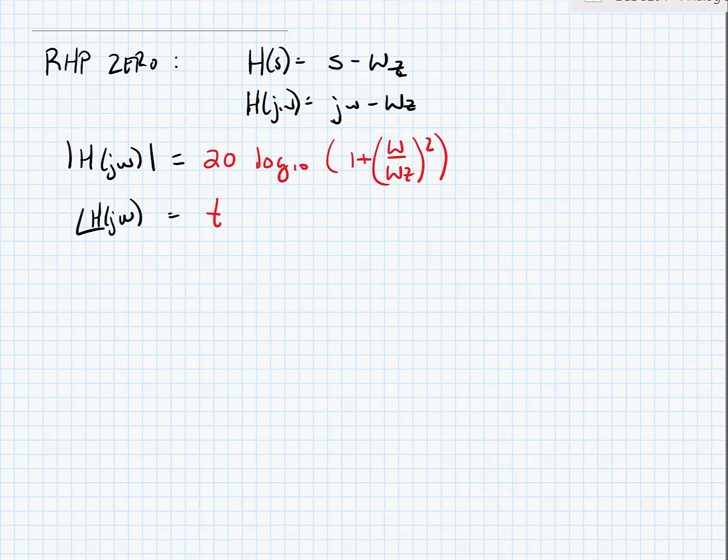The angle is equal to the arctangent of minus omega over omega z. Here we can see that this is approximately 0 when omega is small. When omega equals omega z, it's approximately minus 45 degrees. And when omega is much bigger than omega z, it's approximately minus 90 degrees. So here we can see the phase shift is opposite of that for the left half plane zero.